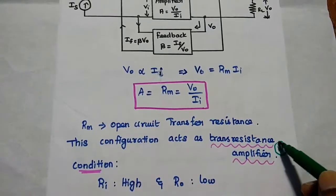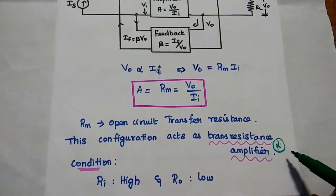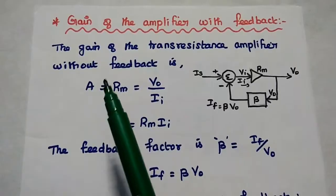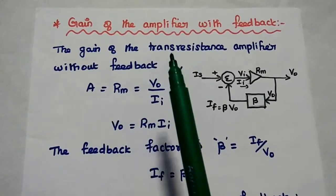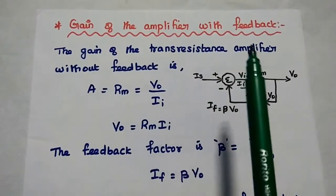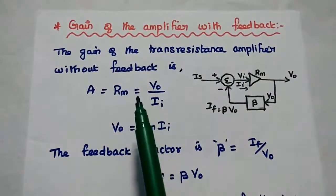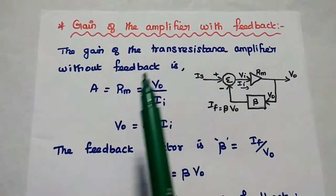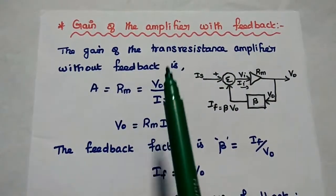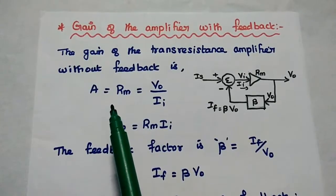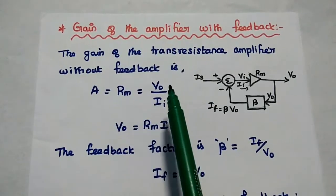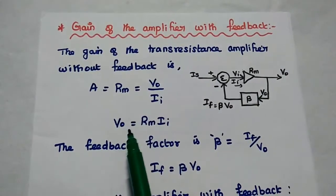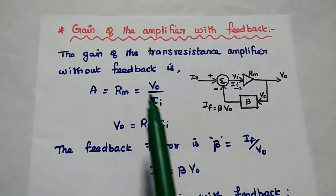The shunt-shunt feedback amplifier is also called a trans-resistance amplifier. Next, we are going to analyze the gain of the amplifier with feedback. We consider the gain of the trans-resistance amplifier without feedback: A equals Rm equals VO divided by II, giving VO equals Rm into II.